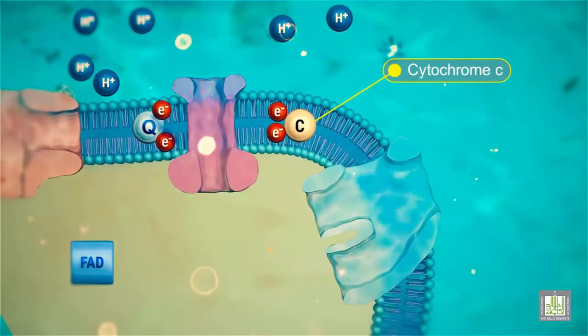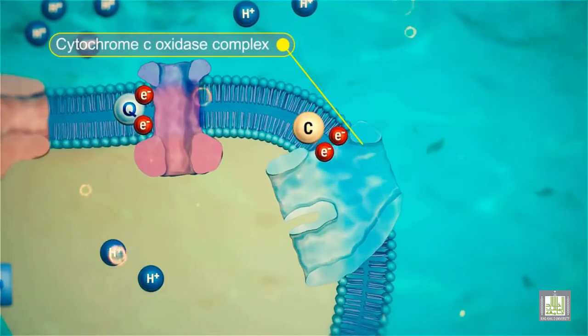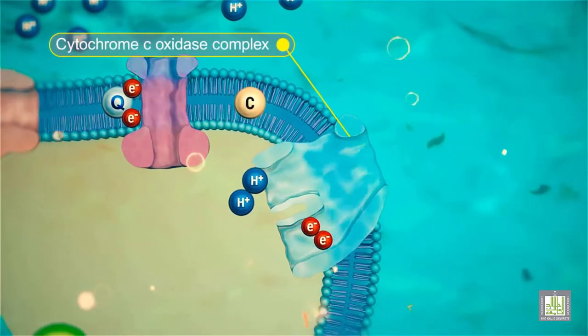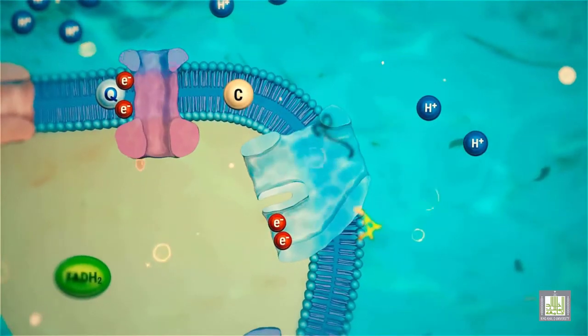Cytochrome C transfers electrons to the cytochrome C oxidase complex. Protons are also transferred to the outside of the membrane by the cytochrome C oxidase complex.